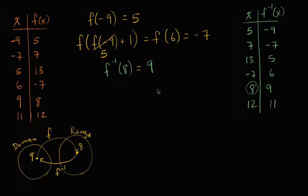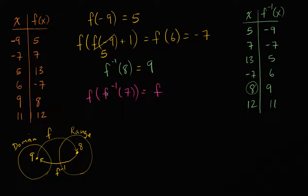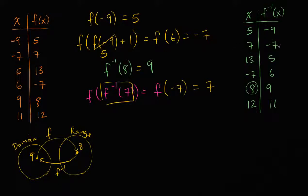So now we can use that to start doing fancier things. Let's evaluate f of f inverse of seven. Well, let's first evaluate f inverse of seven — f inverse of seven maps from seven to negative seven. So this is going to be f of negative seven. And then, to evaluate the function, well, f of negative seven is just going to be seven again. That makes complete sense — we mapped from seven, f inverse of seven went from seven to negative seven, and then evaluating the function of that went back to seven.